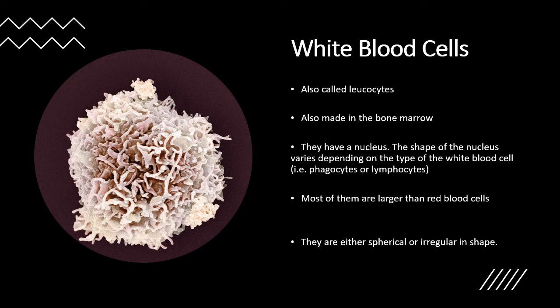White blood cells are like the armies of our bodies — they fight for us whenever we are infected. Also called leukocytes, they are made in the bone marrow. White blood cells have a nucleus, and the shape of the nucleus depends on the type of white blood cell. Most white blood cells are larger than red blood cells and can be spherical or sometimes irregular in shape, depending on their function.